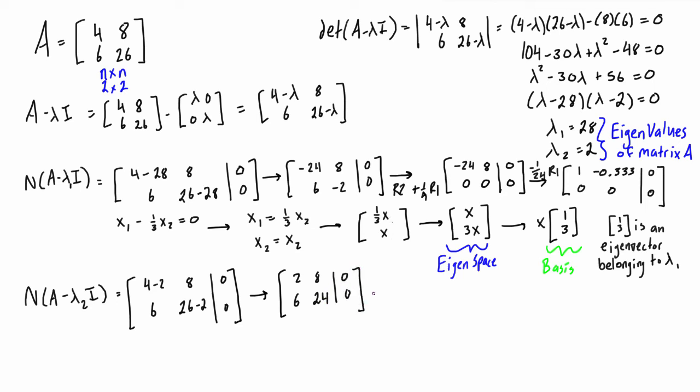We want to reduce this down to reduced row echelon form. To do that, we're going to do row 1 divided by 2 and row 2 divided by 6. Then you can see that if we just subtract row 1 from row 2, the whole second row gets knocked out to zeros.